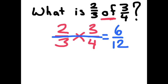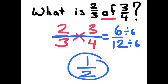Well, 6 out of 12 when reduced by the GCF is going to be 1 half. 2 thirds of 3 fourths is a half.